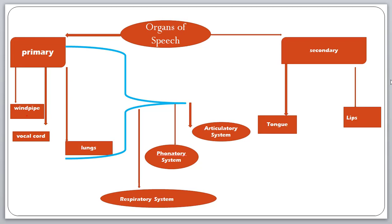The air comes from outside, enters the lungs, the lungs convert the air into speech sound and push it to the vocal cord, the vocal cord converts it further and passes it to the windpipe, and the windpipe passes it back through the mouth and lips to produce speech sound. This process involves three systems: the respiratory system (lungs), the phonatory system (vocal cord and windpipe), and the articulatory system (tongue and lips).